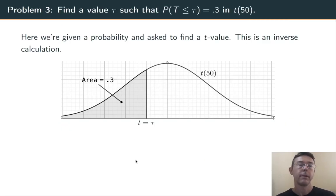Problem three. Find a value τ such that the probability that t is less than or equal to τ is 0.3 in the t-distribution with 50 degrees of freedom. So this problem is slightly different.